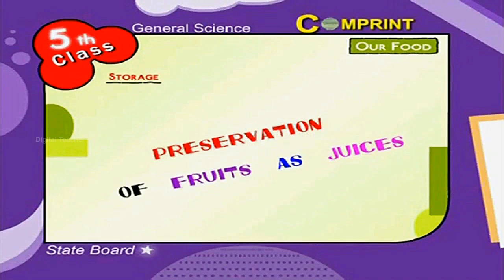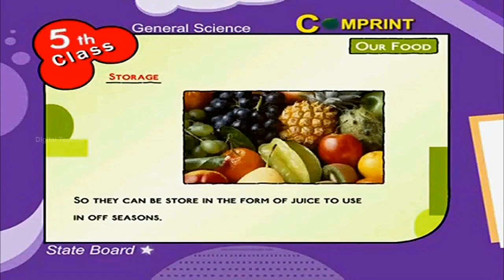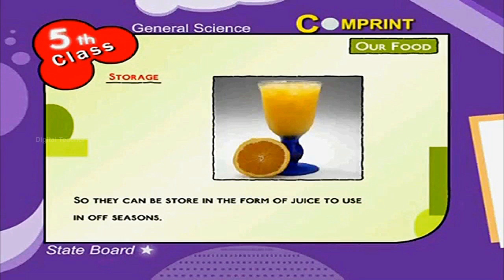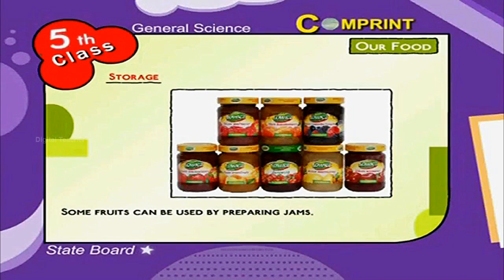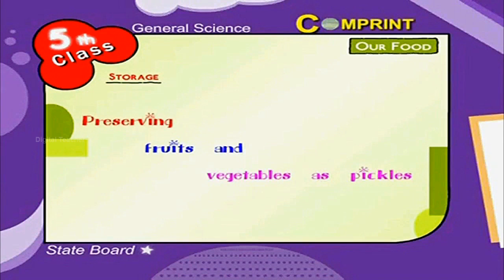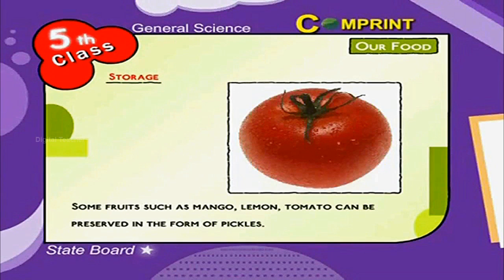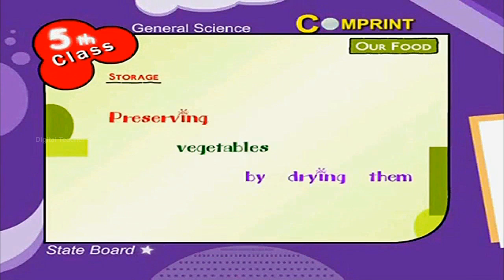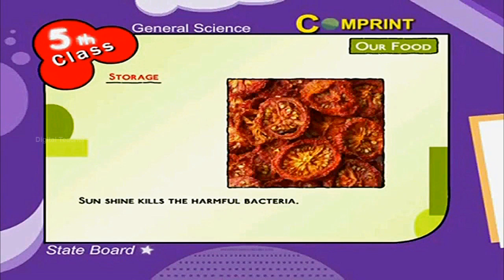Fruits can be preserved in the form of juice to use in off seasons. Some fruits can be used by preparing jams, which are made from the pulp of fruits. Some fruits such as mango, lemon and tomato can be preserved in the form of pickles. We can also preserve some vegetables by sun drying. Sunshine kills harmful bacteria and drying protects vegetables from decay.